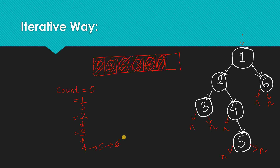Now our queue is empty, which means we have six nodes in our tree. If you count them: 1, 2, 3, 4, 5, 6 — we have six nodes. This is how we do it in an iterative manner. If you couldn't understand it, please go back and check the level order traversal video first, then come back here.